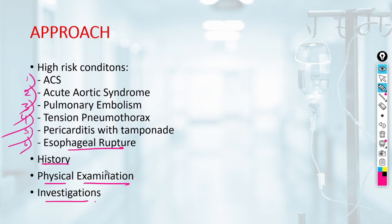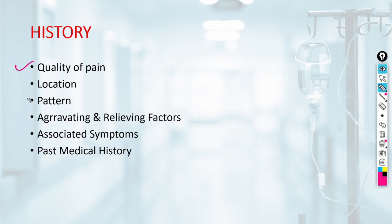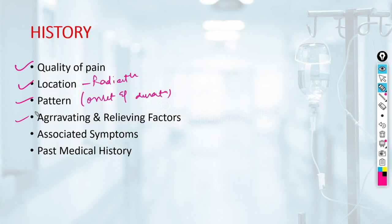The assessment of chest pain relies heavily on clinical history and physical examination to direct subsequent testing. The evaluating physician should assess: quality of pain, location and radiation of pain, pattern including onset and duration, aggravating and relieving factors, associated symptoms, and past medical history — which has an important role in narrowing the differential diagnosis.